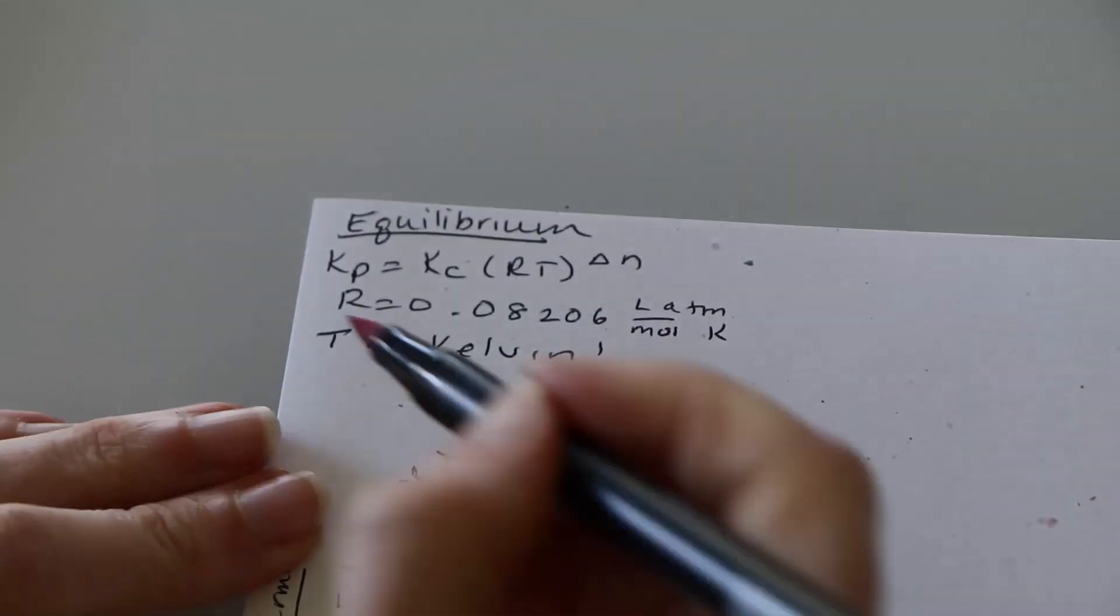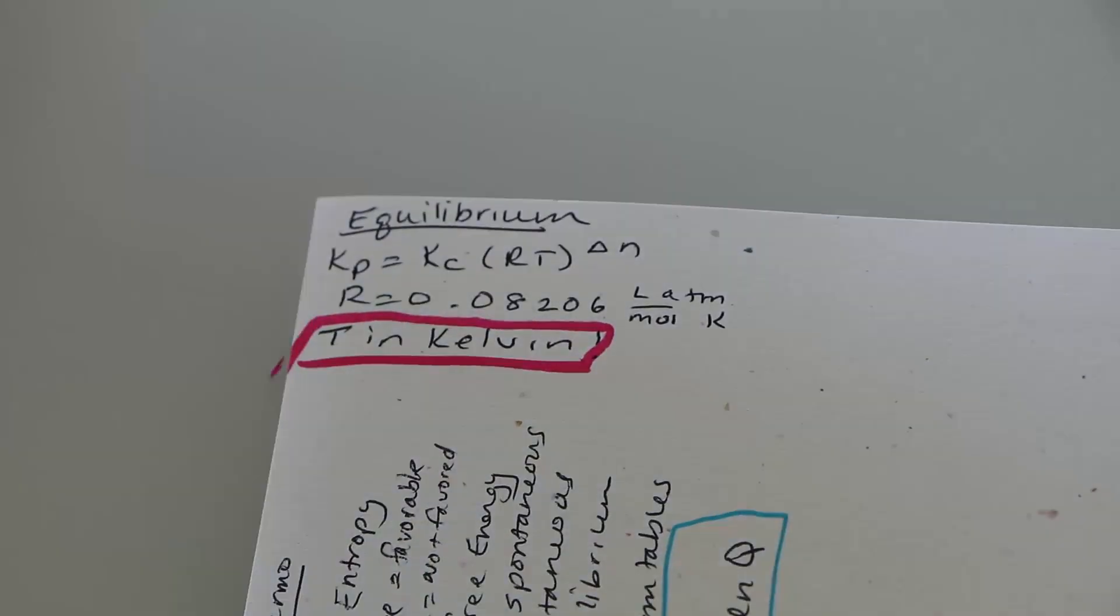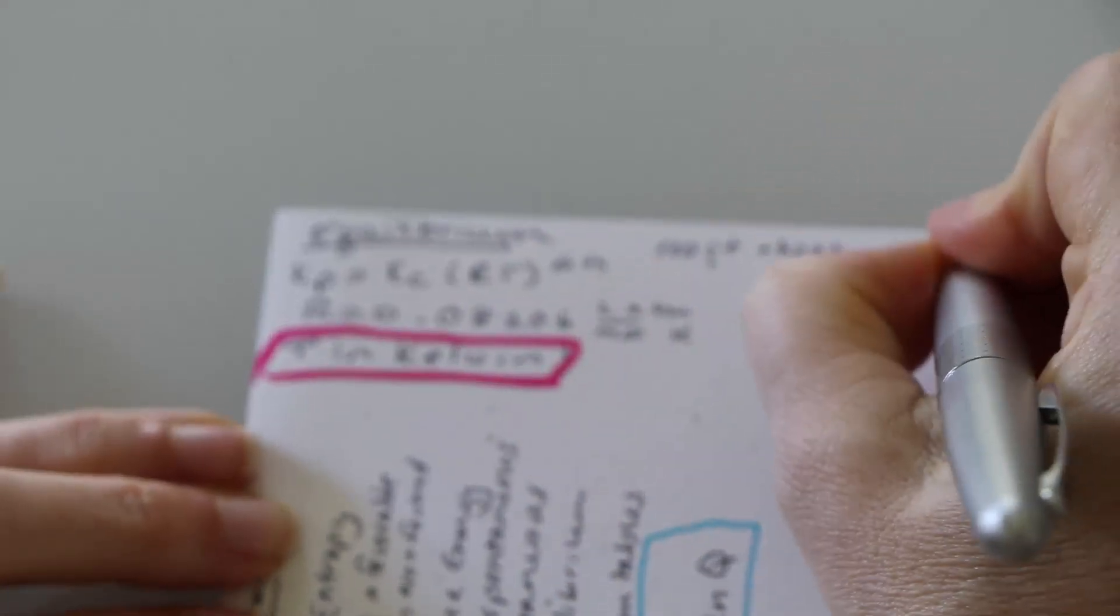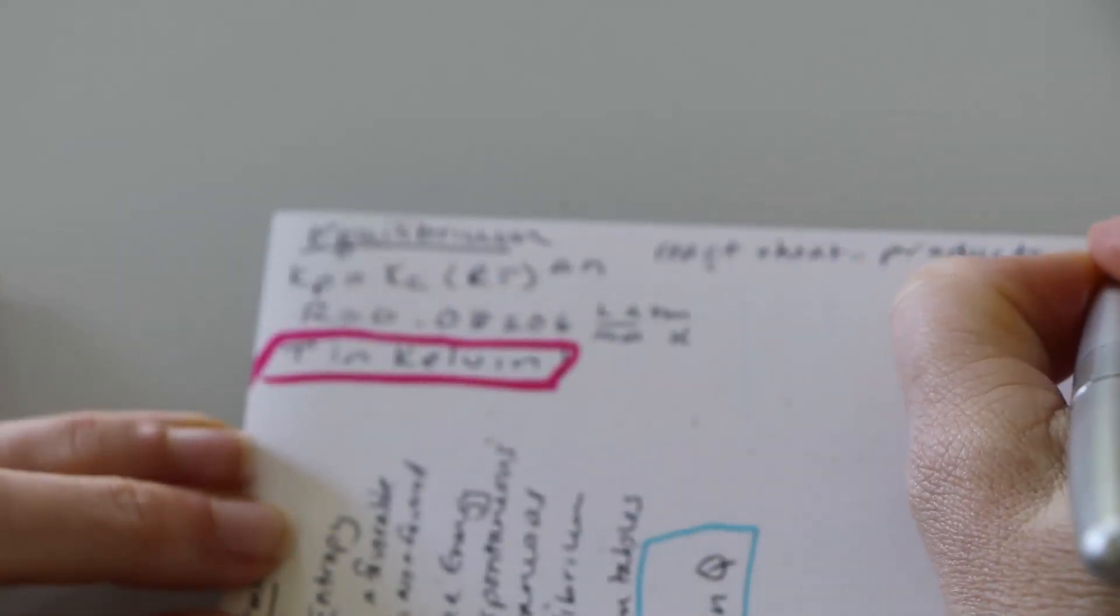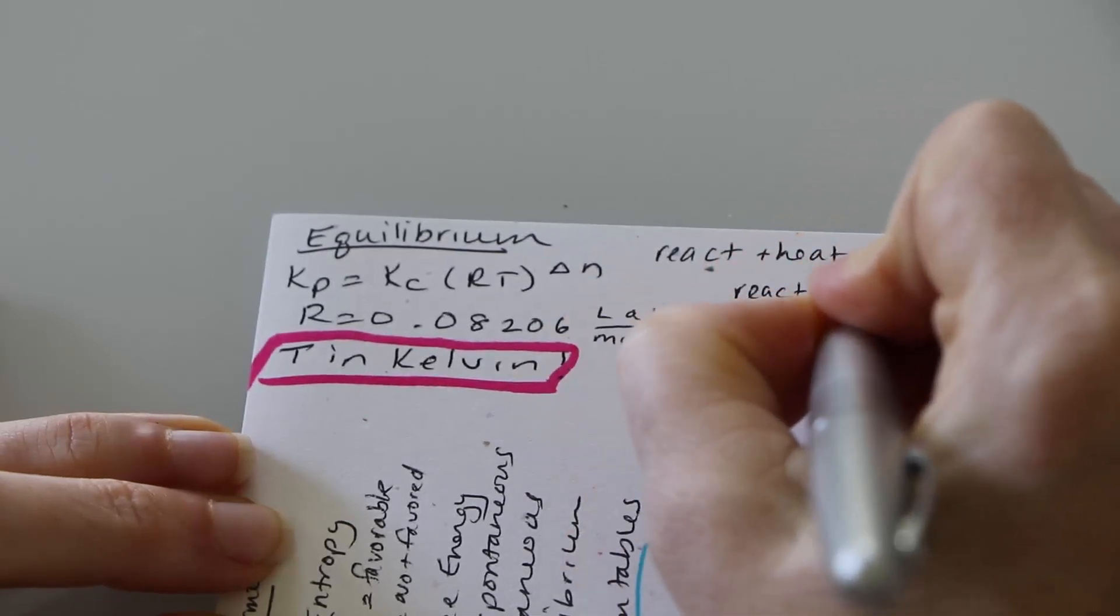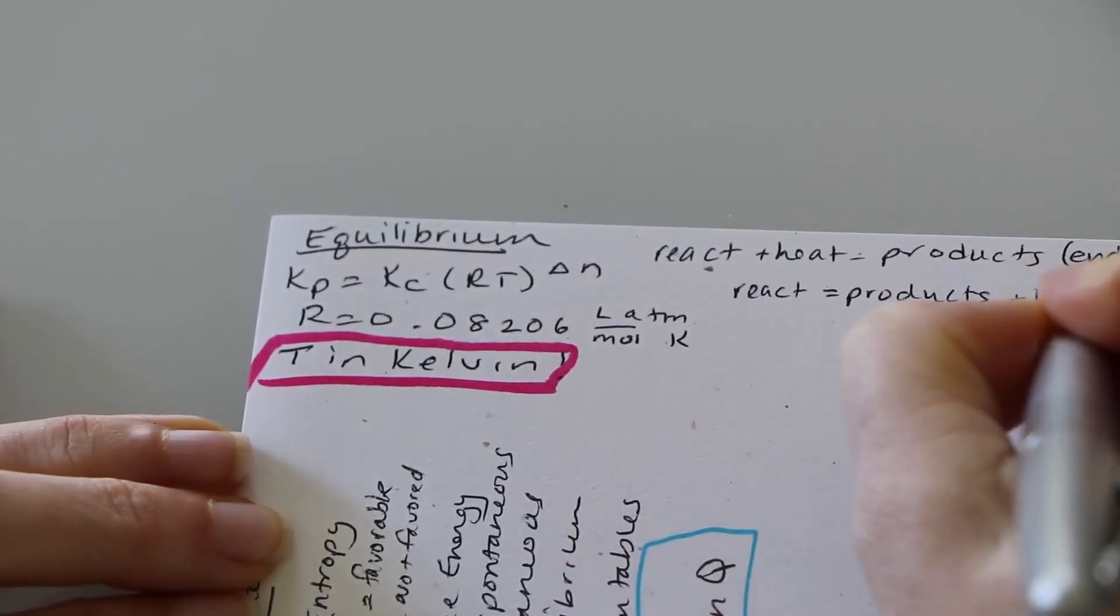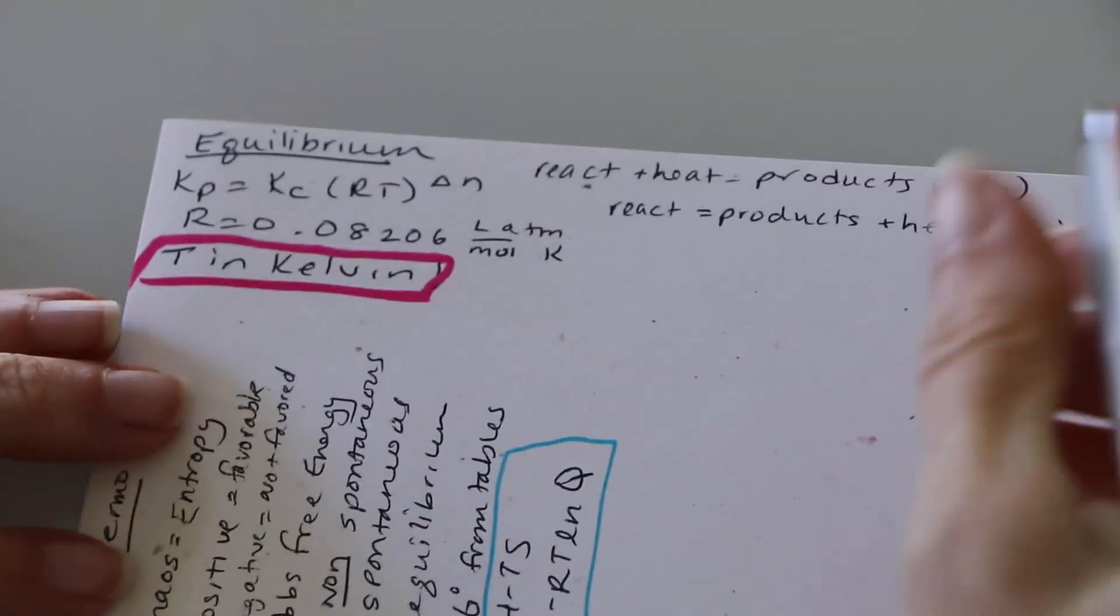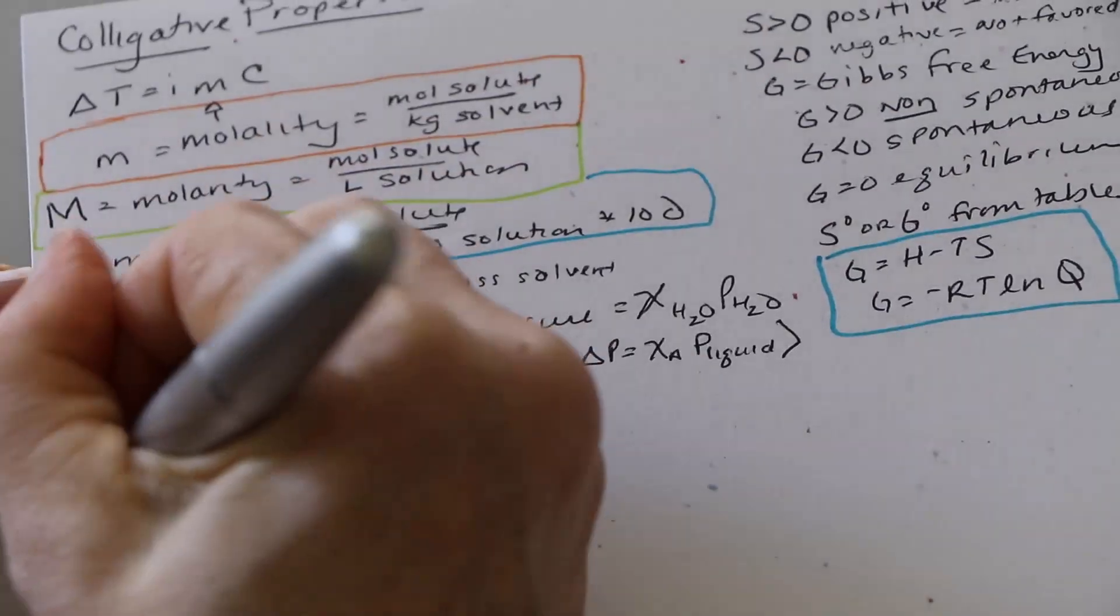There isn't too much to write down for equilibrium and I'm sorry it's not quite in focus. So KP is equal to KC times the RT function raised to the delta N. Now R is 0.08206. Make sure you write down your constants if you can't remember them. Your delta N is the change in gas moles. Make sure your T is in Kelvin.